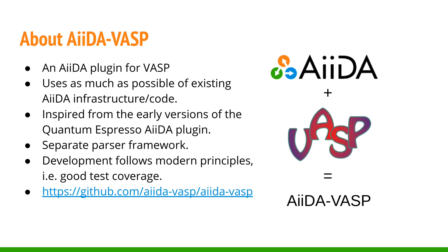Plugins that interface with codes have a few key elements for them to be useful. In particular, the input and output parsers, which in this case makes it possible to interact with VASP and its produced results. As such, the parser framework is a separate component in IDA-VASP, making it possible to utilize the parser components also outside the plugin.